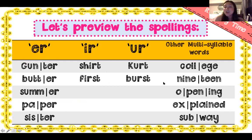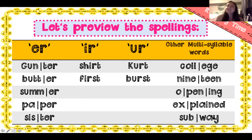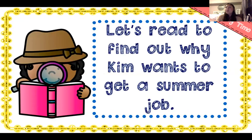Because we've been looking at these er words, I want you to look for them in our reader. Here are some other multi-syllable words — meaning two or more syllables — that we're going to see: college, 19, opening, explained, and subway. It's good to look at these words before we get started so we can read fluently, meaning really without stopping. Today as we read Morning together, we're going to read to find out why Kim wants to get a summer job.